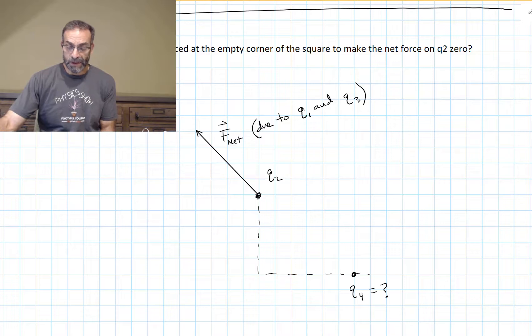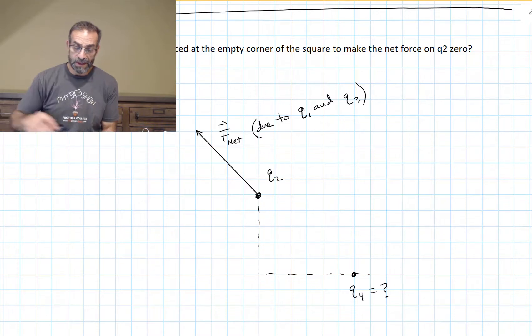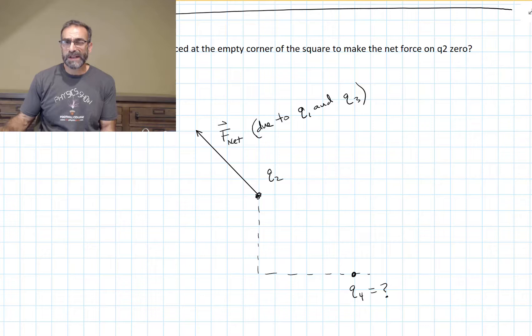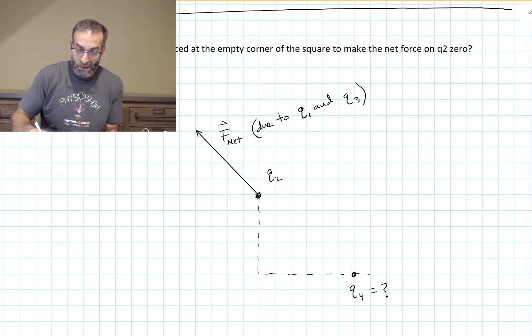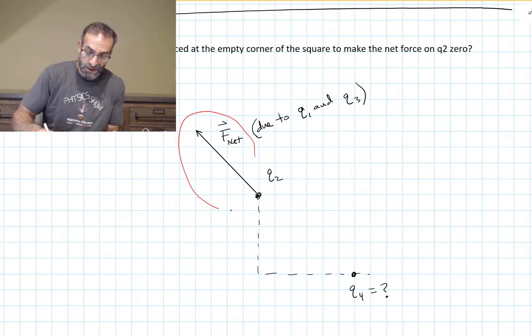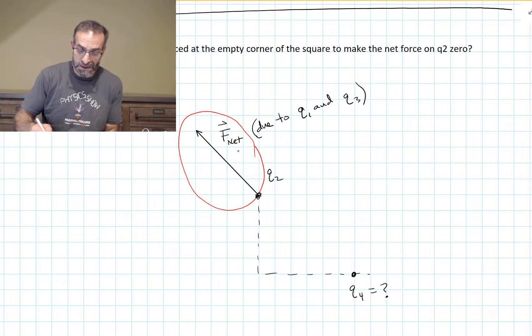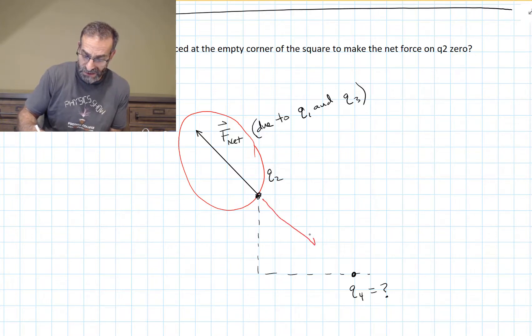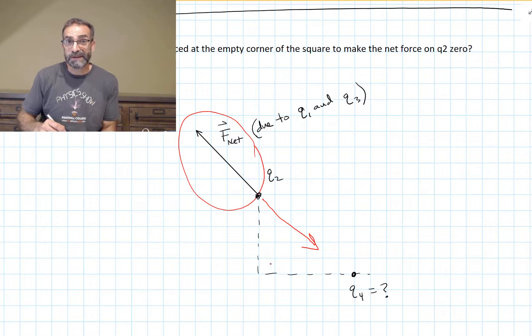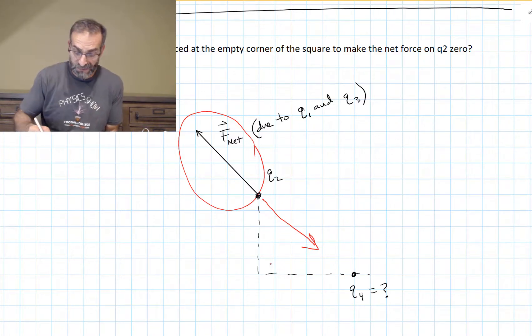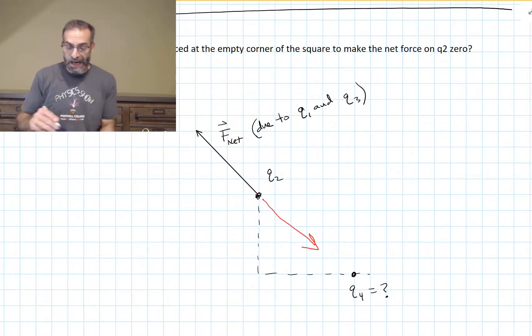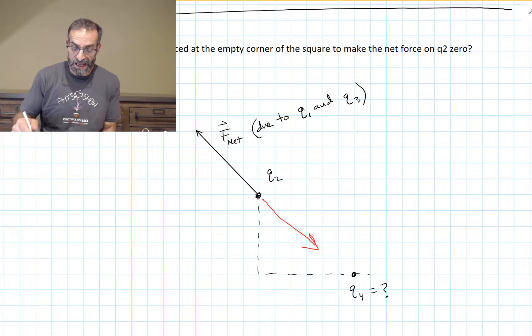This is a summary of the net force due to Q1 and Q3 points up and to the left the way I drew it here. And we're going to put another charge, I'm calling it Q4 at the empty corner of the square. And we want to make the net force on Q2 zero. So what sign does Q4 have to be? Does it have to be positive or negative? In order to negate this force, in order to cancel out that force, we have to have a force in this direction due to Q4. However, it has to attract Q2, so it has to have the opposite sign of Q2. It has to be negative. Q4 has to be negative.